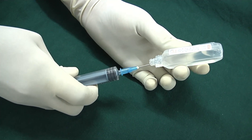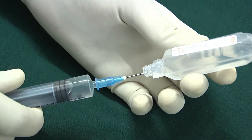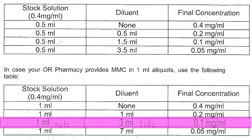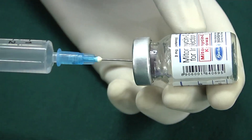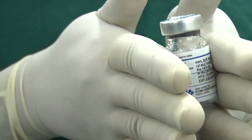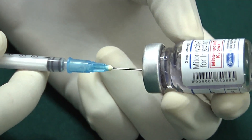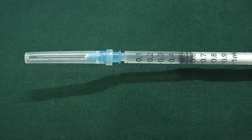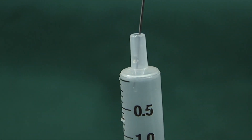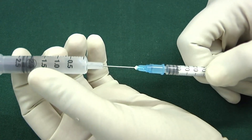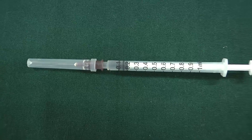The concentration of mitomycin C in literature varies from 0.05 mg per ml to 0.1 mg per ml. Here, 5 ml of saline is mixed with 2 mg of mitomycin C injection powder. Then 0.5 ml of this mixture is mixed with 1.5 ml of lidocaine, resulting in a concentration of mitomycin C of 0.1 mg per ml. Then 0.1 ml of this solution is taken for the injection.